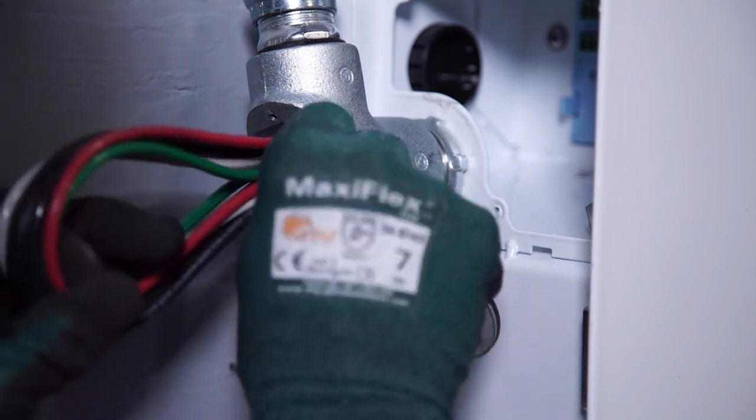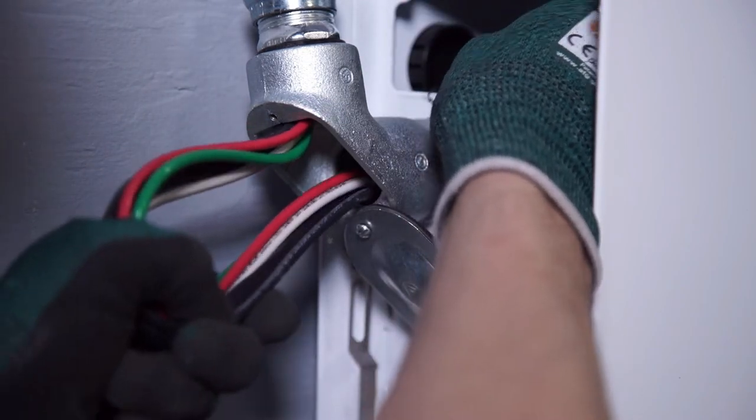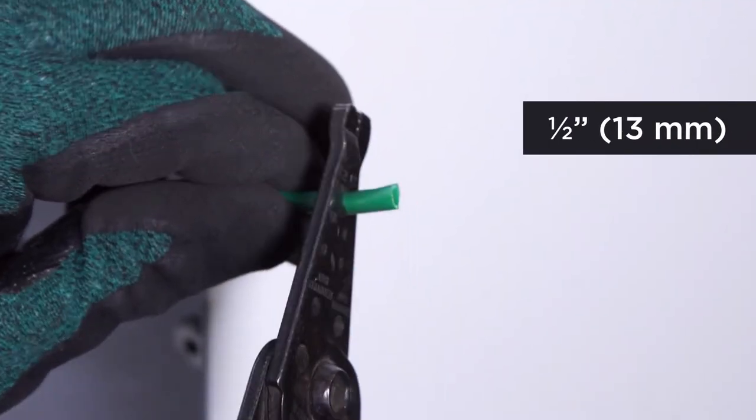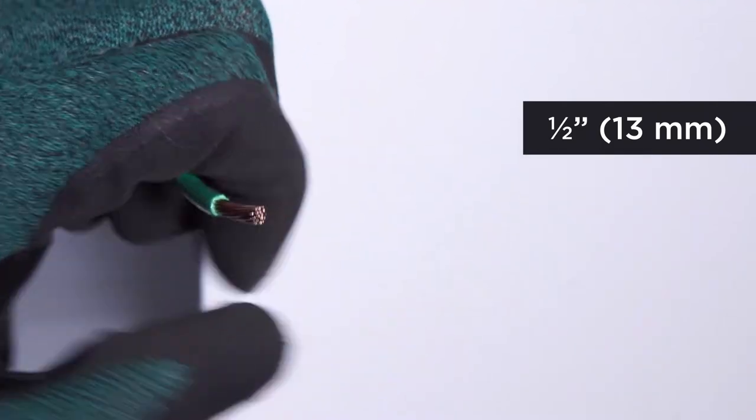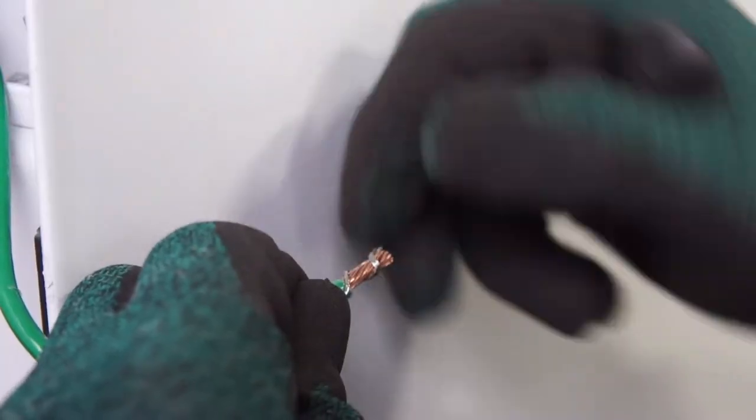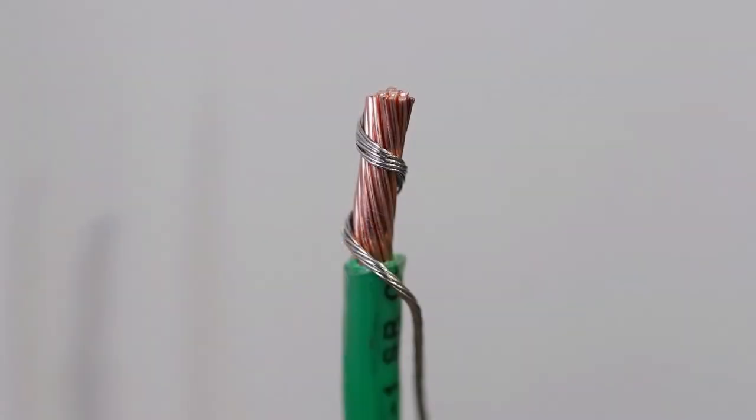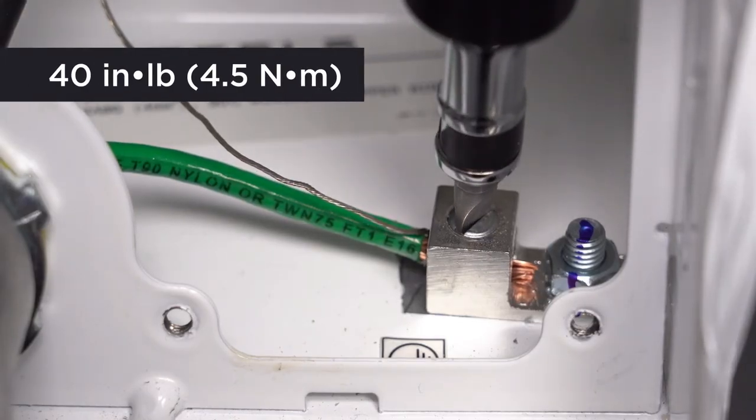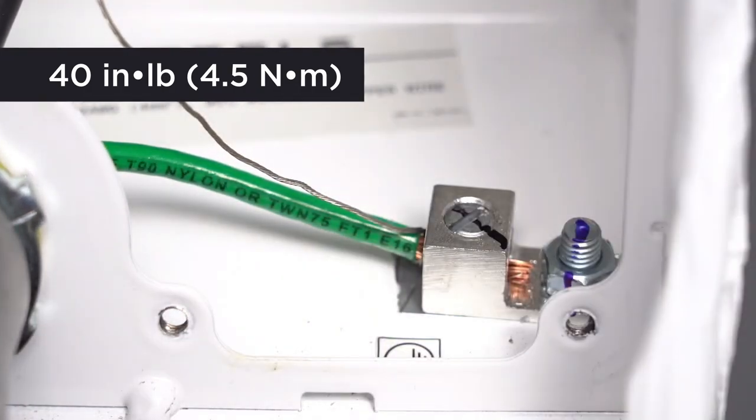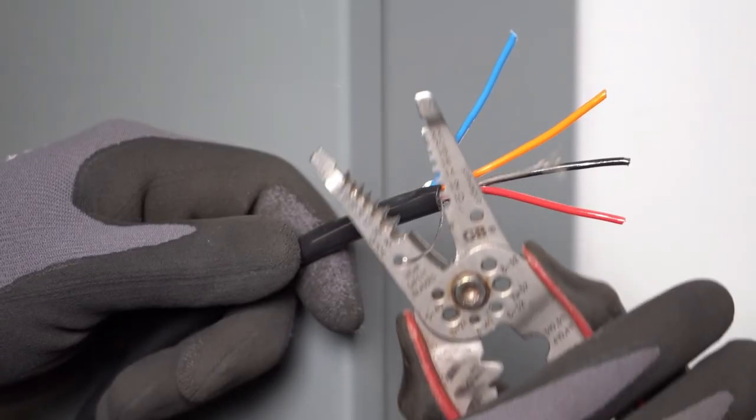Pull the equipment grounding conductor, AC conductors, and communication cables into the wiring compartment. Strip half an inch of insulation off the end of the equipment grounding conductor. Take the drain wire from the communication cable and twist it around the grounding conductor. Next, connect them both to the ground lug.